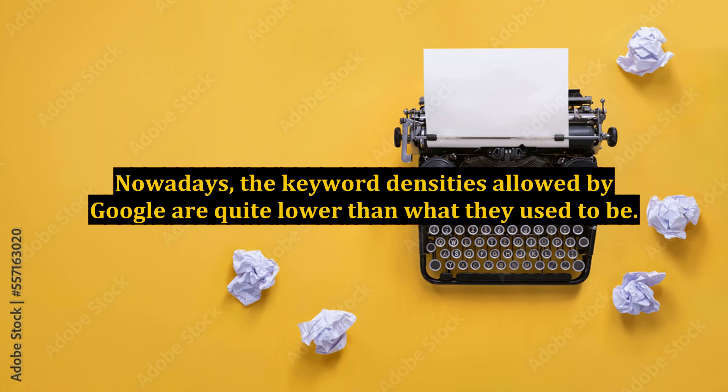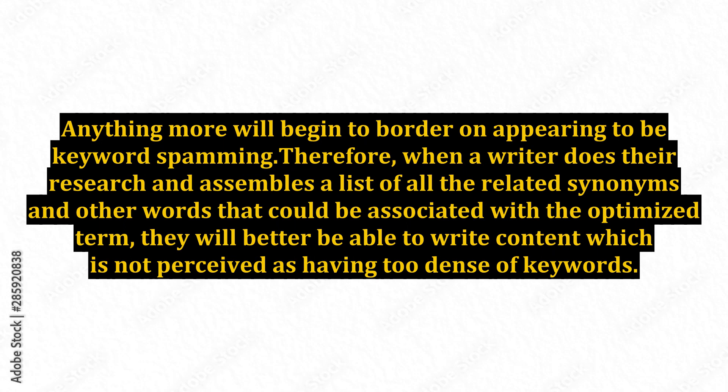Nowadays, the keyword densities allowed by Google are quite lower than what they used to be. In the past, 5-7% was quite the norm. However, today 1-2% is more expected by the Google search engine. Anything more will begin to border on appearing to be keyword spamming. Therefore, when a writer does their research and assembles a list of all the related synonyms and other words that could be associated with the optimized term, they will better be able to write content which is not perceived as having too dense of keywords.